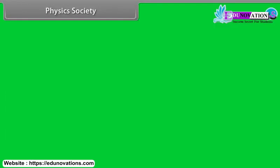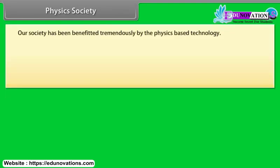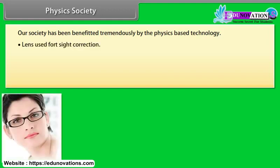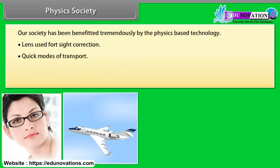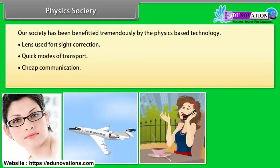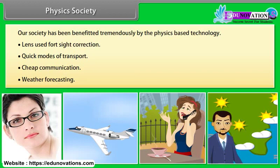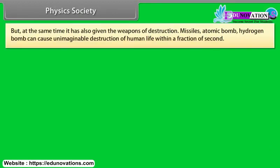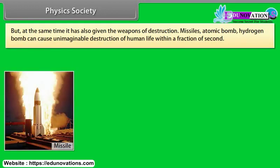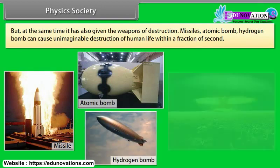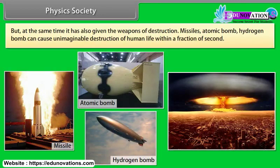Physics and society: our society has been benefited tremendously by physics-based technology. Lenses used for sight correction, quick modes of transport, cheap communication, and weather forecasting are some new dimensions of progress due to physics. But at the same time, it has also given us weapons of destruction — missiles, atomic bombs, and hydrogen bombs — which can cause unimaginable destruction of human life within a fraction of a second.